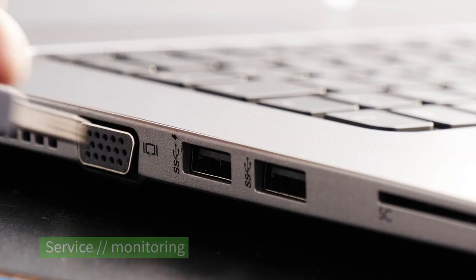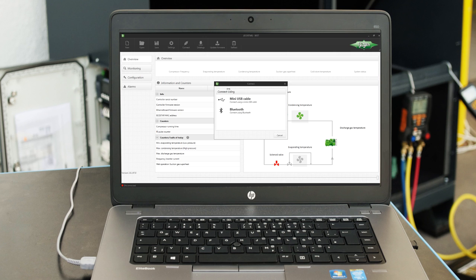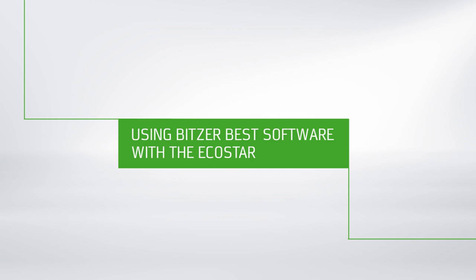The user friendly echo star controller can communicate with the Bitsa Best software via a USB port or wirelessly via Bluetooth. These options make handling of all the echo stars many functions child's play. The Best software is available for download free of charge from the Bitsa website.